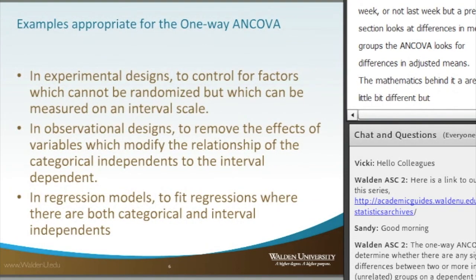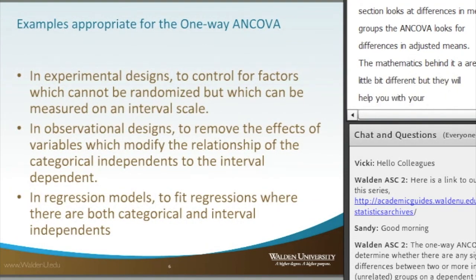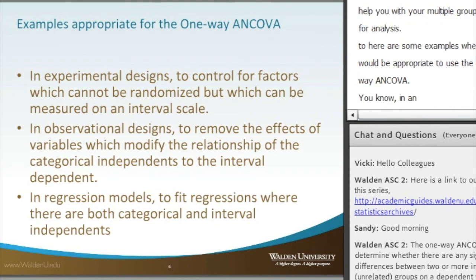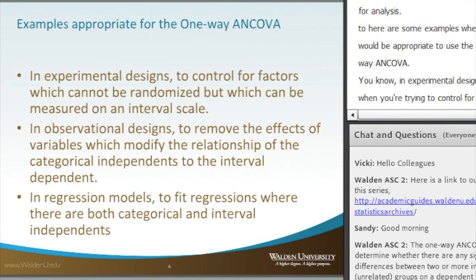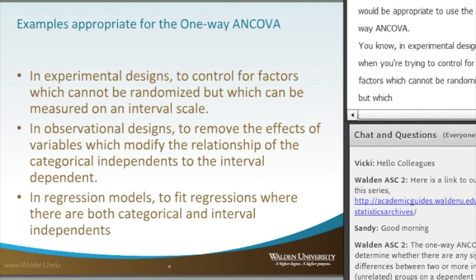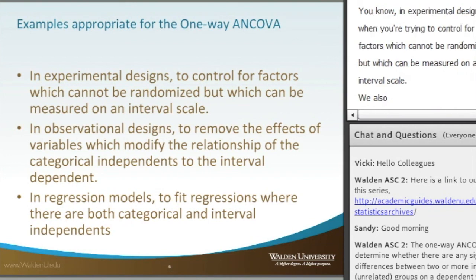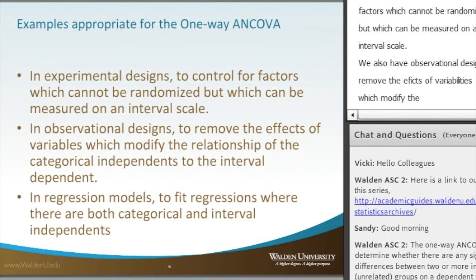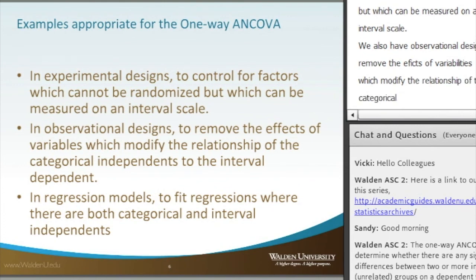Here are some examples where it would be appropriate to use the one-way ANCOVA. In experimental designs, when you're trying to control for factors which cannot be randomized but which can be measured on an interval scale. We also have observational designs to remove the effects of variables which modify the relationship of the categorical independent variable to the interval dependent variable, because we're always looking at the effect of the variables onto the dependent variable, which is our variable of interest.